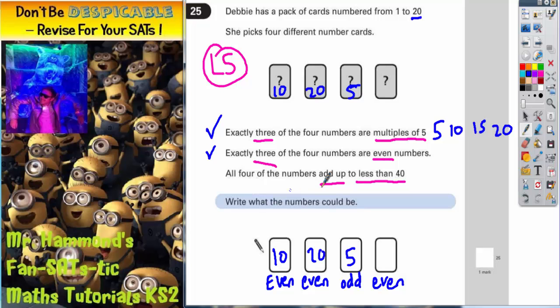But it does say that all 4 numbers add up to less than 40. Now if we add these up so far, 10 plus 20 plus 5 makes 35. So I've got to add on the last number to make it less than 40, but it's got to be even. So I could add on 2 to make 37, or I could add on 4 to make 39. I can't add on 6, because that would make 41, and that would take me over 40. So for the last box, I've got 2 possible answers. I could put 2 or 4.